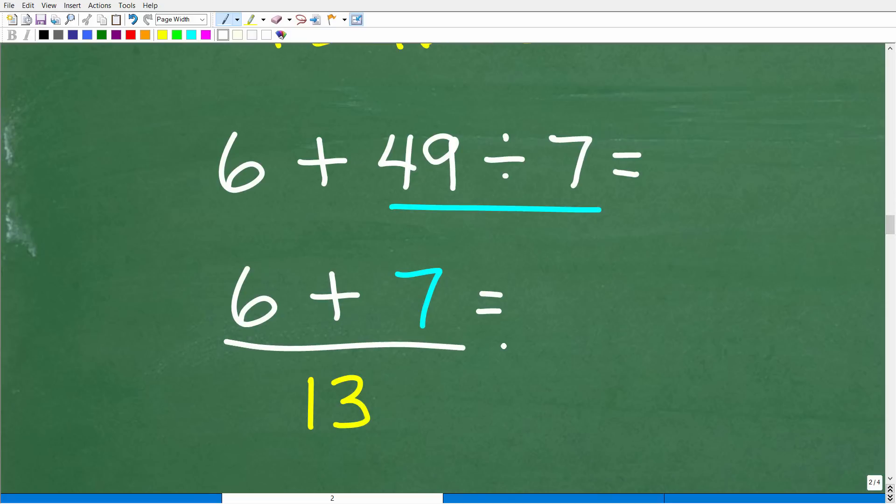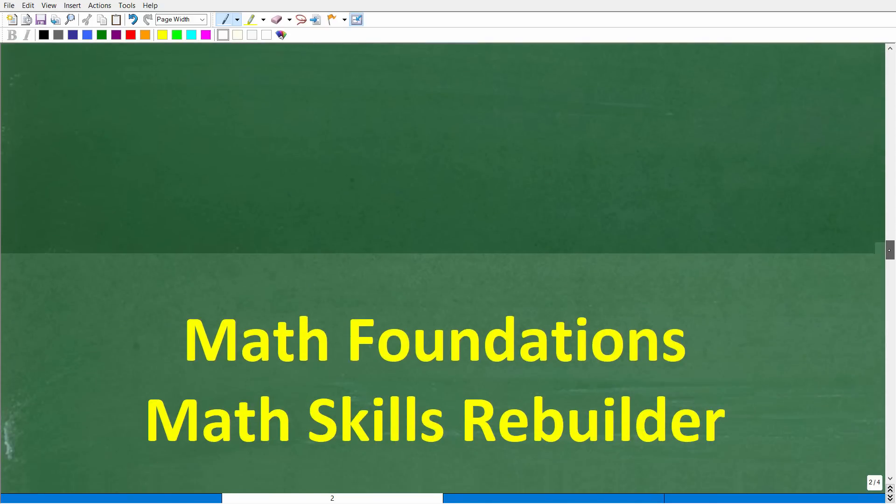And now we're down to 6 plus 7, which, of course, is 13. All right, so hopefully this little video was a nice review on PEMDAS, which, of course, is the order of operations. So don't feel bad if you got this wrong, because a lot of people don't really understand the order of operations as well as they should.